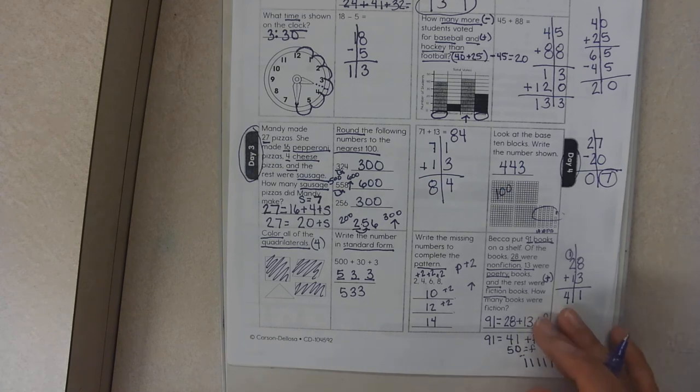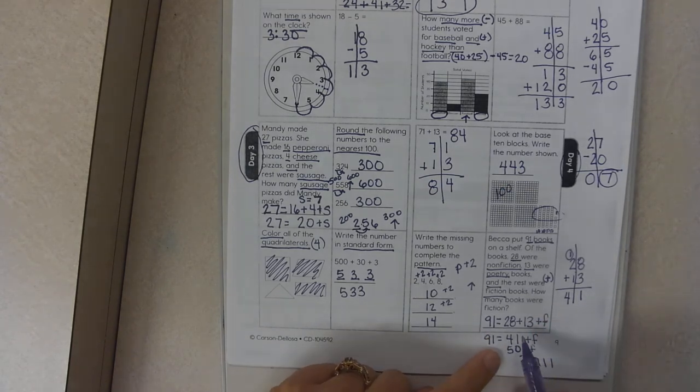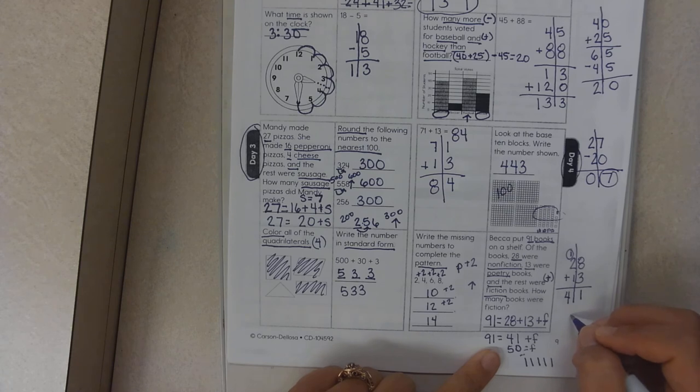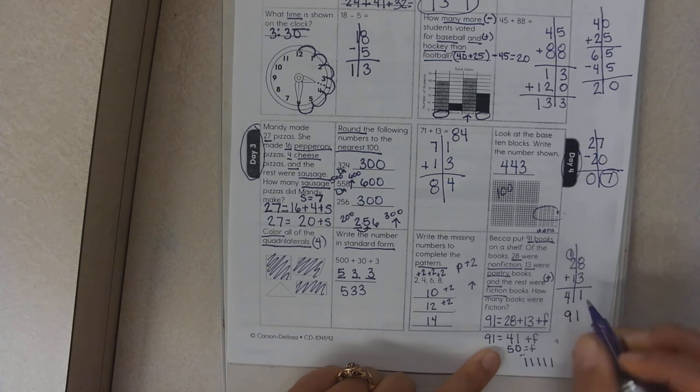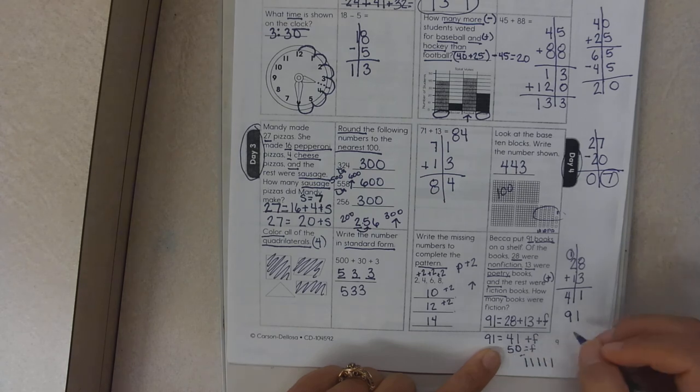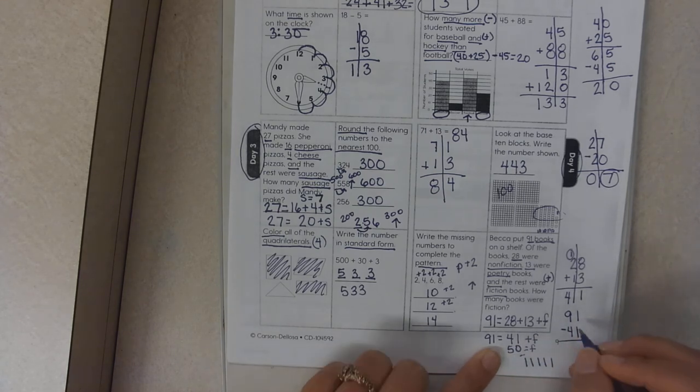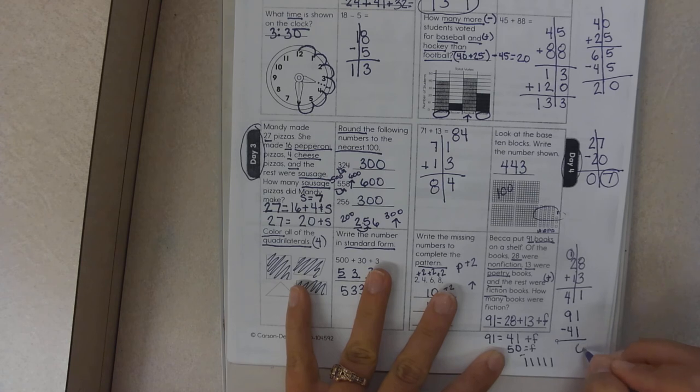Another way you could do that is... this is actually a standard that is way above third grade. That is the reason why I did not show it to you. But if you're adding on this side to get rid of it, you need to subtract it. And you can go: one take away one is zero, nine take away four is five.